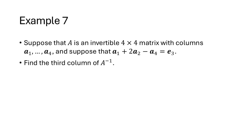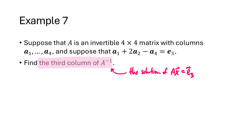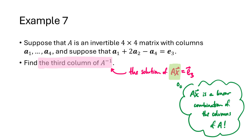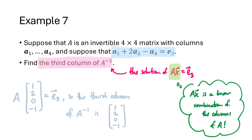This is useful for solving problems like this: suppose we have an invertible 4×4 matrix with columns A1 through A4, and we know that A1 plus 2A2 minus A4 equals the standard basis vector E3. How do we find the third column of A inverse? The third column of A inverse is the solution to AX equals E3. Since AX is a linear combination of the columns of A, and A1 + 2A2 - A4 = E3, that means A times the vector (1, 2, 0, -1) equals E3. So the third column of A inverse is (1, 2, 0, -1).